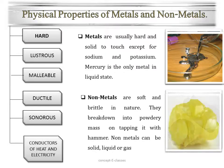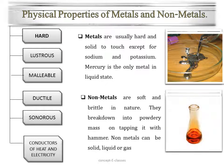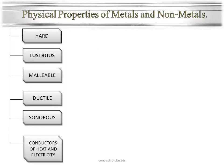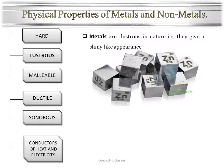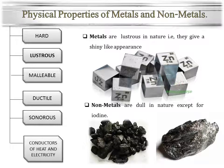Nonmetals can be found in solid state, liquid state, and also gaseous state — such as oxygen, nitrogen, hydrogen, etc. The next property is lustrous. Metals are lustrous in nature; that is, they give a shiny appearance. If you see zinc metal, you can find a shiny appearance. Whereas nonmetals are dull in nature, except for iodine. Iodine is the only nonmetal which is lustrous in nature.